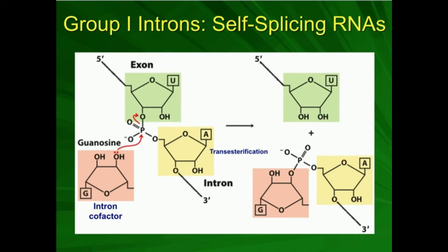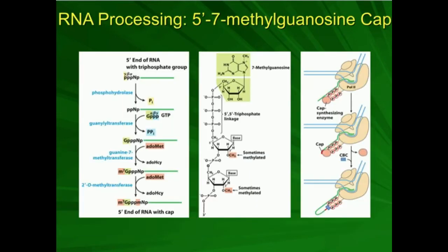In the previous video, we talked about mRNA processing and the first step that occurs: the addition of the 5' 7-methylguanosine cap. We talked about how that was important for 5' region stability, for recognition by the ribosome when we start translation, and also for transport of the mRNA out of the nucleus.